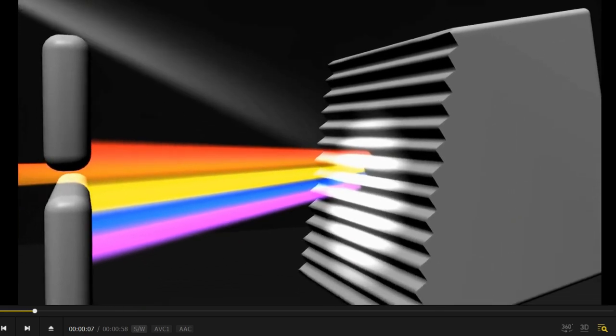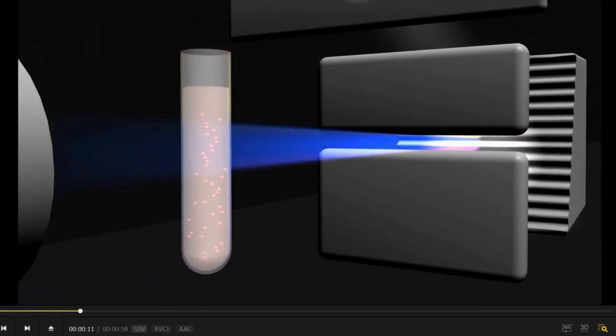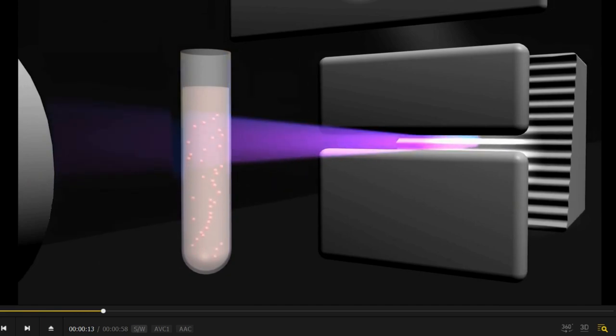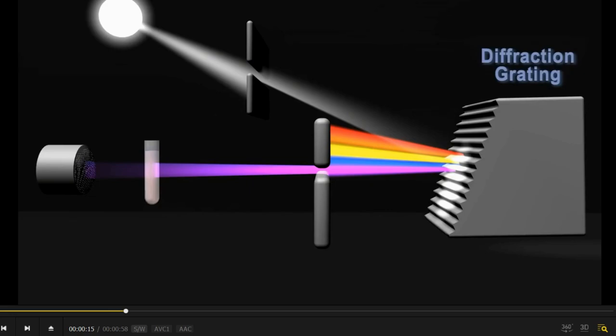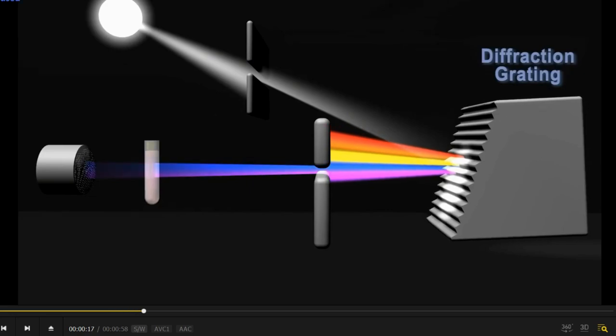This is a light source. From light source, the radiation, polychromatic radiations is coming. And then, after that, the interaction is taking place. Now, how it works? As you can see, from the light source, the polychromatic light is coming.